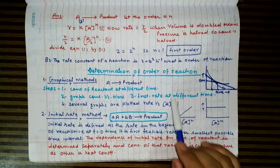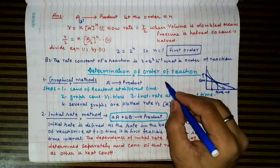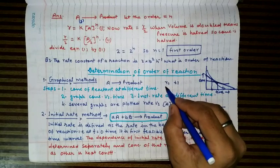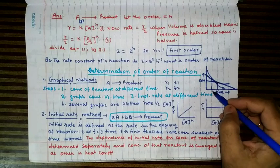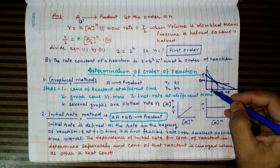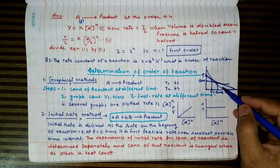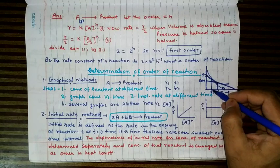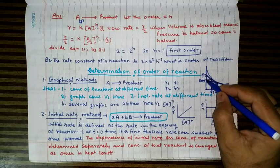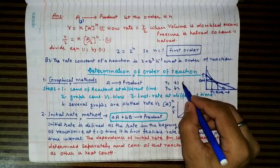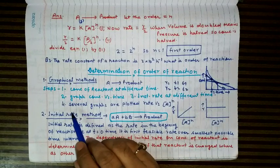Once we have a table of rates at different times — R1 at T1, R2 at T2, R3 at T3 — we also read off the corresponding concentrations from the concentration-vs-time graph. At time T1, the slope of the tangent gives rate R1, and reading the Y-axis at T1 gives concentration C1. Similarly C2 corresponds to T2, and so on.